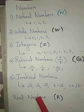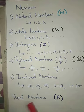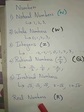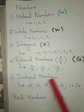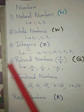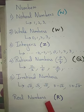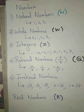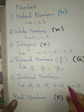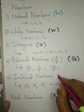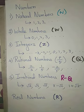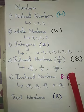A common name for all these numbers is real numbers. Real numbers include natural numbers, whole numbers, integers, rational numbers, and irrational numbers. Real numbers are denoted by the letter R. Irrational numbers are denoted by R minus Q, so wherever you see R minus Q, it denotes an irrational number.